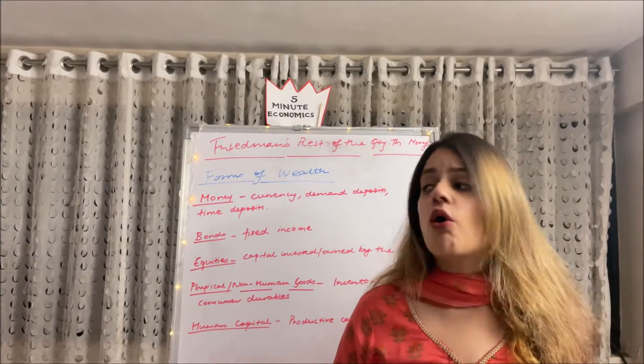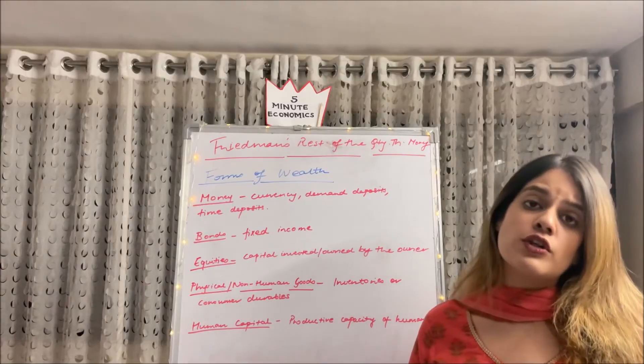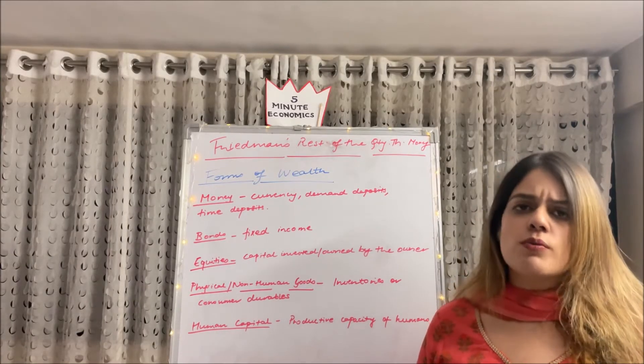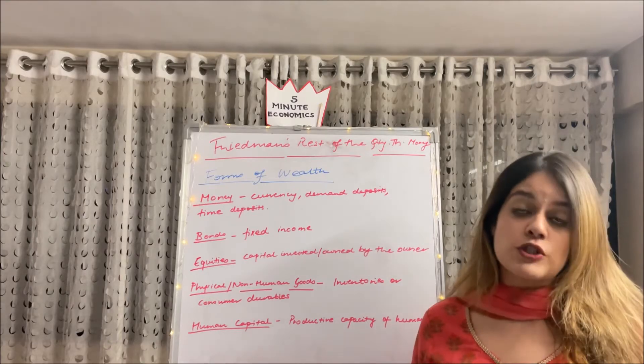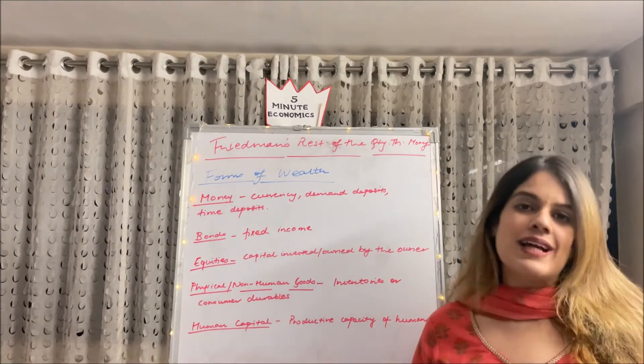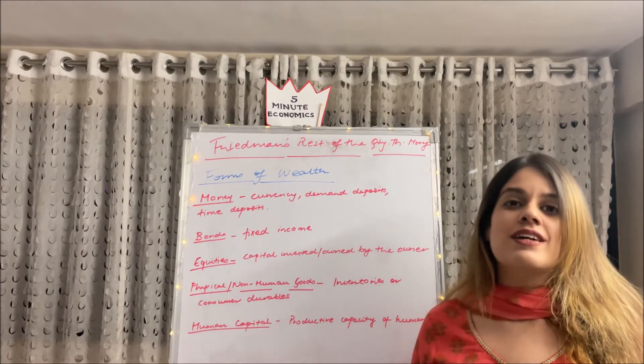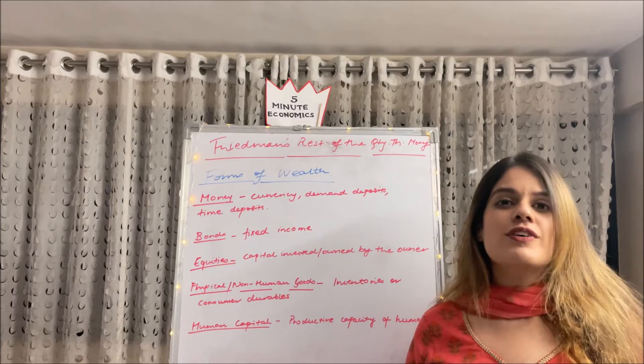Next, physical or non-human goods, that is also wealth for the firm. Whatever he has in excess like the inventories or consumer durables, that is also his wealth, the producer's wealth. And lastly human capital, which is the productive capacity of humans. Your skill, your knowledge is also wealth. So these are the various forms of wealth.